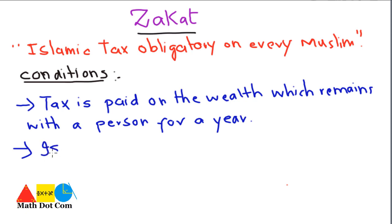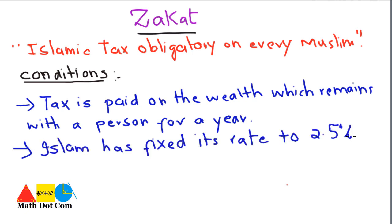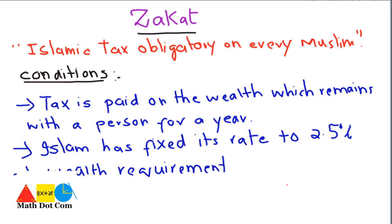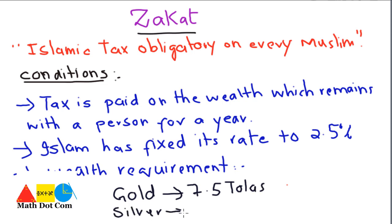Islam has fixed the zakat rate at 2.5%. The minimum requirement of wealth for payment of zakat means the minimum wealth you should have to be eligible to pay zakat. If you have gold of 7.5 tolas or silver of 52.5 tolas, this wealth should be with you for a year, and then you have to pay the zakat.